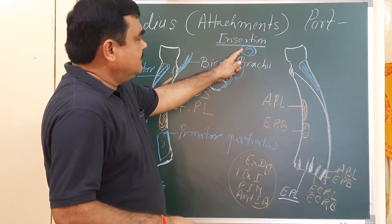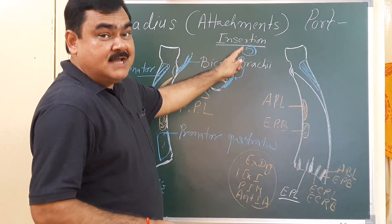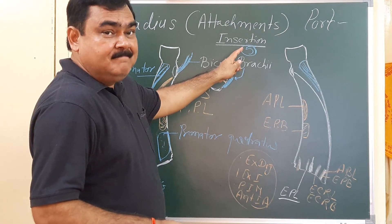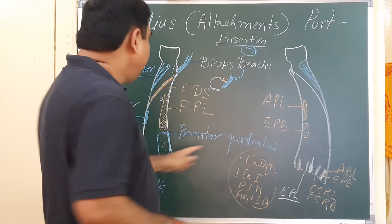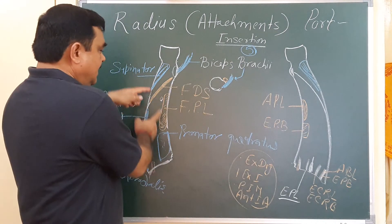So you have seen there are five muscles which are inserted into the radius, and there are four muscles that take origin from the radius.